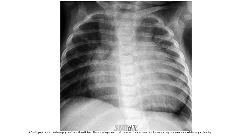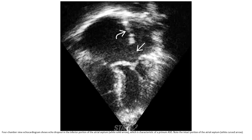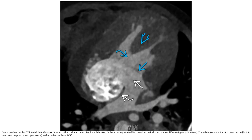The radiograph of cardiomegaly in a one-month-old infant demonstrates enlargement of all chambers and increased pulmonary artery size secondary to left-to-right shunting. On the four-chamber echocardiographic view, echo dropout in the inferior portion of the atrial septum is characteristic of an ostium primum ASD. A four-chamber echocardiogram demonstrates an ostium primum defect in the atrial septum with a common AV valve. There is also a ventricular septal defect in this patient with AVSD.